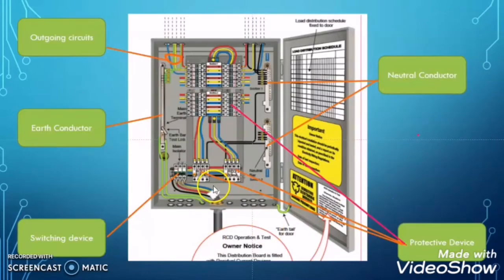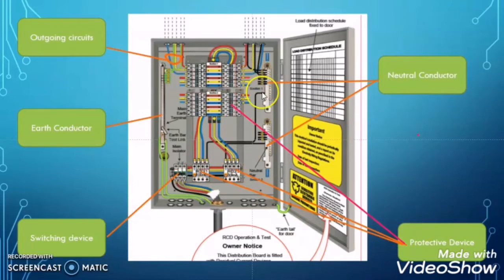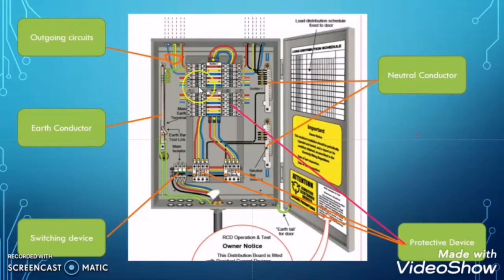Here is an image of one type of distribution board. You can see that the distribution board is an assembly for housing the switching devices and the protective devices. This is the neutral bar and this is the earth bar. So this distribution board is housing the neutral conductors and the earth conductors along with the outgoing and incoming circuits. So from the definition it is very clear that the distribution board is an assembly to house the switching devices, protective devices, neutral conductors, earth conductors, and the outgoing and incoming circuits.